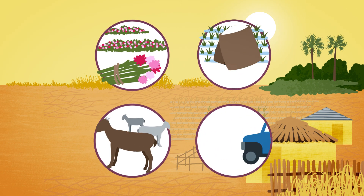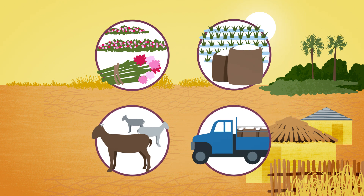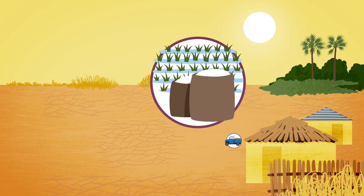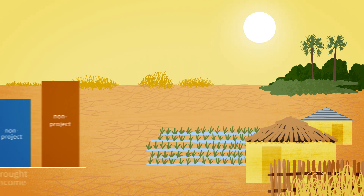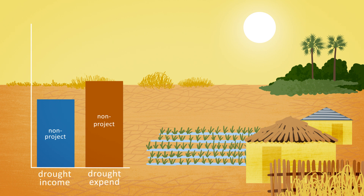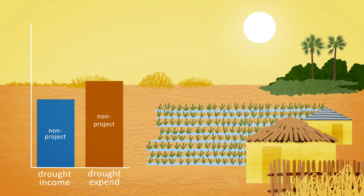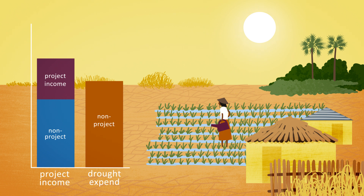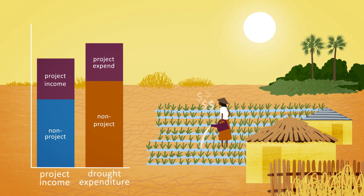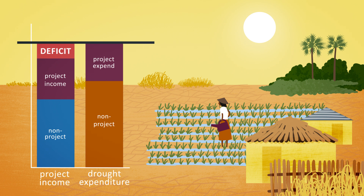Let's now see if any of the projects would fill this deficit. First up, rice intensification. This helps the household to produce more rice, meaning that in a drought year they have more both to consume and sell than they would with no project. But the cost of water for irrigation also rises in a drought, which entails increased expenditure. Ultimately, we can see that the project reduces the deficit, but does not eliminate it.